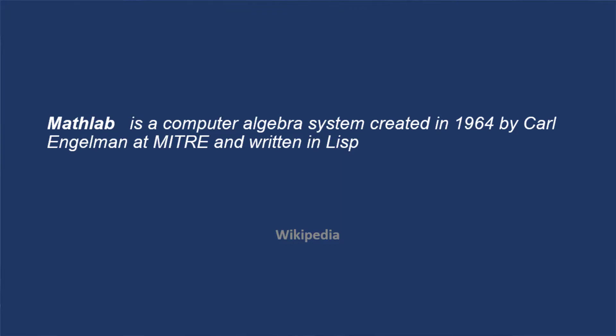Now, something I've said for a long time — and if you've heard me talk about it, even when I went through Andrew Ng's machine learning course — you may have heard me call it MATLAB. But apparently there is a MATLAB. What is MATLAB? Not to be confused with MATLAB and not MathWorks. MATLAB is a computer algebra system created in 1964 by Carl Engelman at MITRE and written in LISP. We're not talking about MATLAB today. We're talking about MATLAB, and I'm not a huge fan of it.